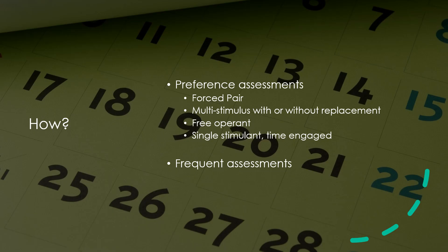Now how to do it. I mentioned preference assessments — a preference assessment is when we determine what does this person like, what do they prefer? Sometimes we figure out what people like by asking caregivers, teachers, parents. That's fine, but we're not going to get as good information as if we do an actual preference assessment. There are multiple different kinds of preference assessments that can be done, and I will go over how to do those later.